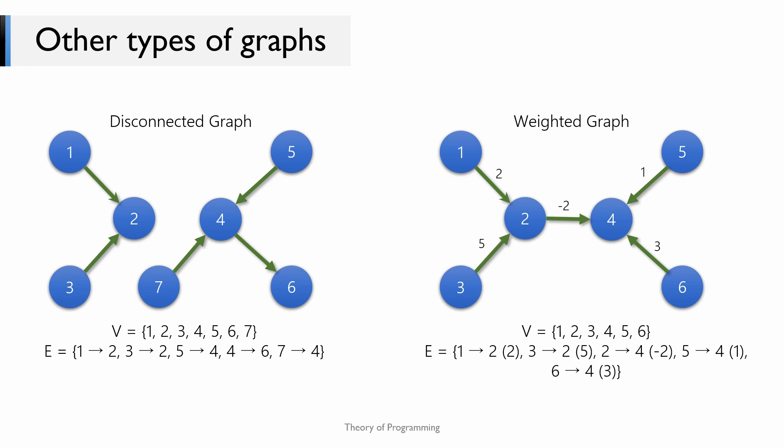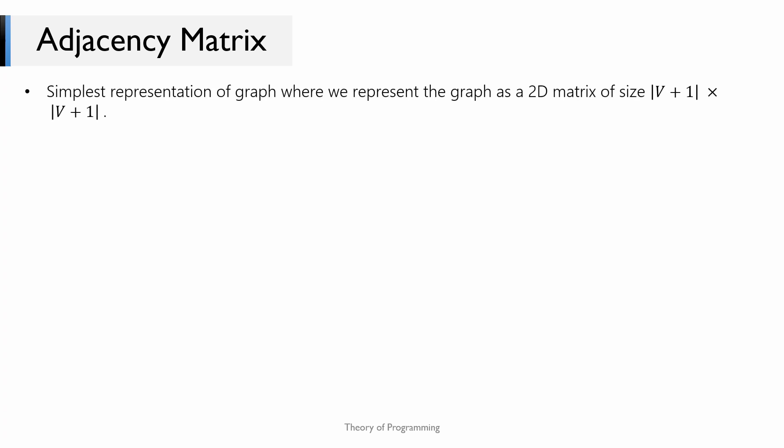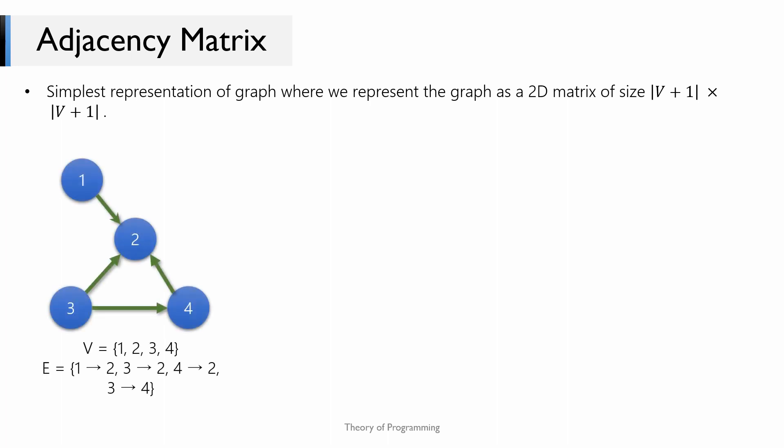We also have a weighted graph. A weighted graph is when you have a weight or a cost associated with each edge. Here, an integer is associated with each edge which denotes its weight. If you remember, the Hogwarts example was a weighted graph. Now let us look at how we can represent a graph using an adjacency matrix. An adjacency matrix is the simplest representation of a graph, where we represent the graph as a 2D matrix of size V+1 × V+1.